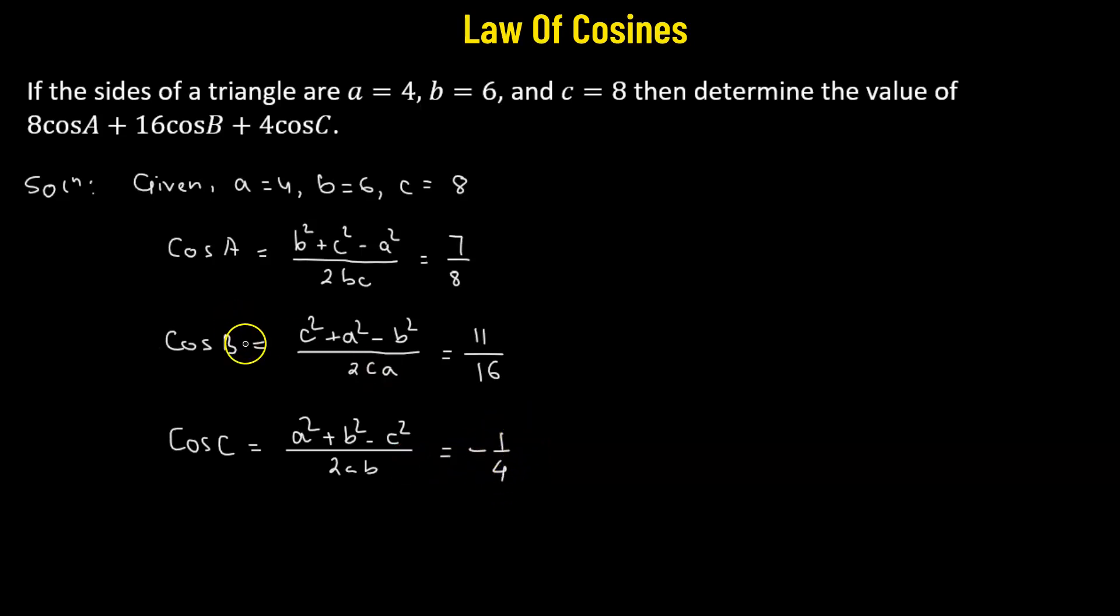Now that we have the value of cosine A, cosine B, and cosine C, then we can find out the value of the given expression. So we have 8 times cosine of A plus 16 times cosine of B plus 4 times cosine of C. Let's substitute this value here.